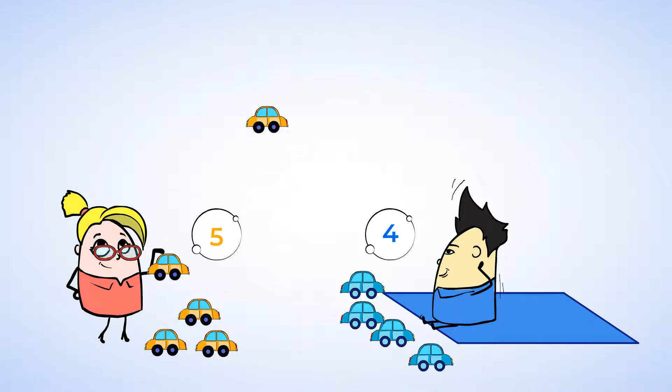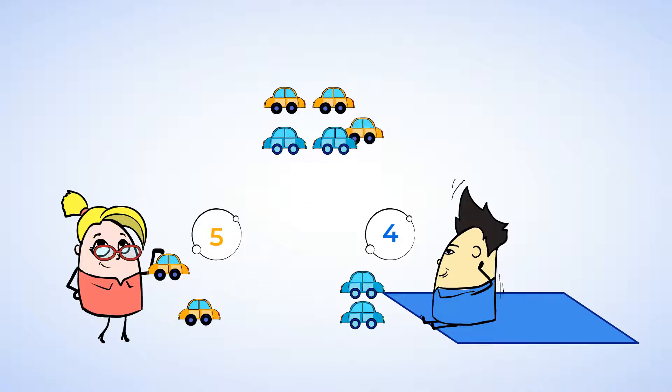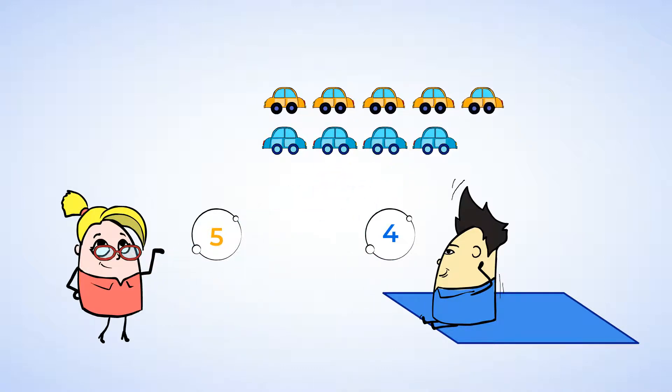And now look, here is one of Jenny's cars, and then here is one of Chen's cars. Okay, another of Jenny's cars, and another of Chen's cars, and we keep going. And look, this is Jenny's last car, but Chen doesn't have any more.